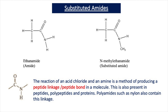The reaction of an acid chloride and an amine is a method of producing a peptide linkage or peptide bond in a molecule. This is a C double bond O-NH bond or linkage, and it is also present in peptides, polypeptides, and proteins. Polyamides such as nylon also contain this linkage.